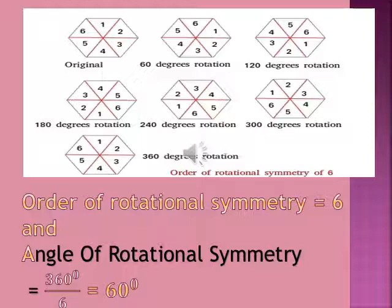Now let's see how we calculate the angle. From the figure we know that for each turn, the figure rotates 60 degrees, so the angle of rotational symmetry is 60 degrees. But how do we calculate it? A complete turn means 360 degrees in mathematics. So: total 360 degrees divided by the order gives the angle. That is 360 ÷ 6 = 60 degrees. So the angle of rotational symmetry is 60 degrees.